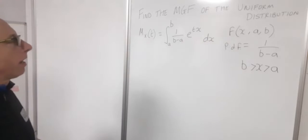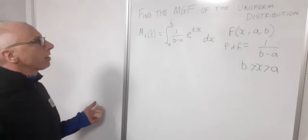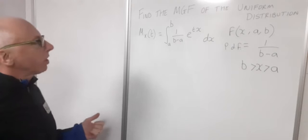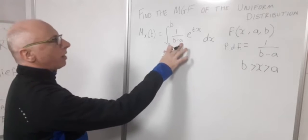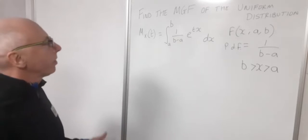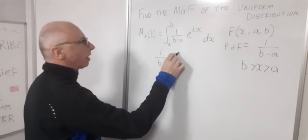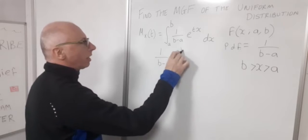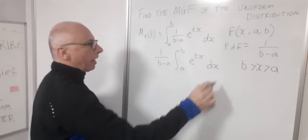So what we do now, just go through the integration. And that's going to give us our answer to our moment generating function. So how do we integrate this? Well, 1 over B minus A is not included in X. So that can come out of the front. So let's do that. So 1 over B minus A. And then A to B, E to the T X, D X.